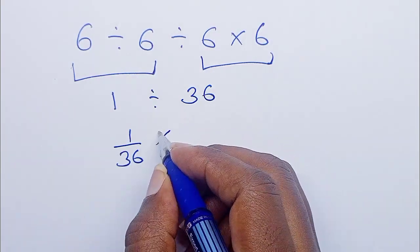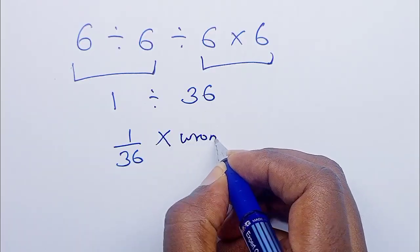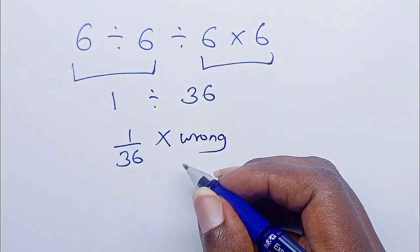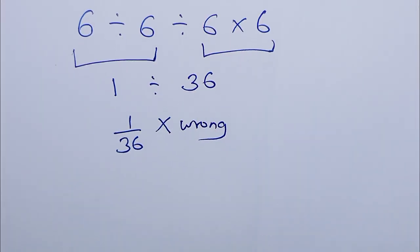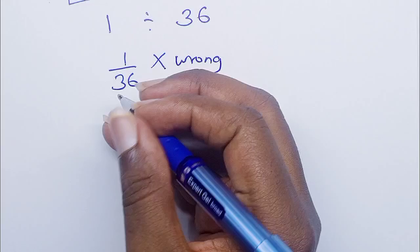If you got 1 over 36 as your answer, this is wrong because you've not followed the order of operations. You're supposed to follow the order of operations,